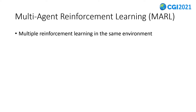Multi-agent reinforcement learning is just an extension of reinforcement learning with multiple agents in the same environment. There are some important concepts exclusive to multi-agent reinforcement learning. The first one is non-stationarity. Since each agent's policy is changing as training progresses, the environment becomes non-stationary from the perspective of any individual agent. An agent will possibly perceive a different state after taking the same action at the same state, with other agents having different policies, and therefore it will learn a poorer policy.